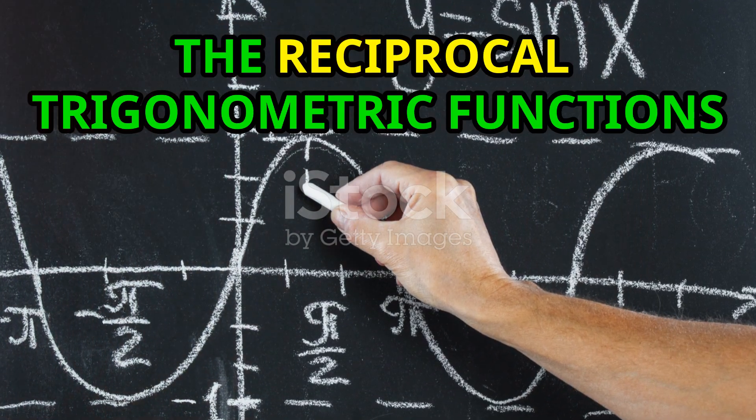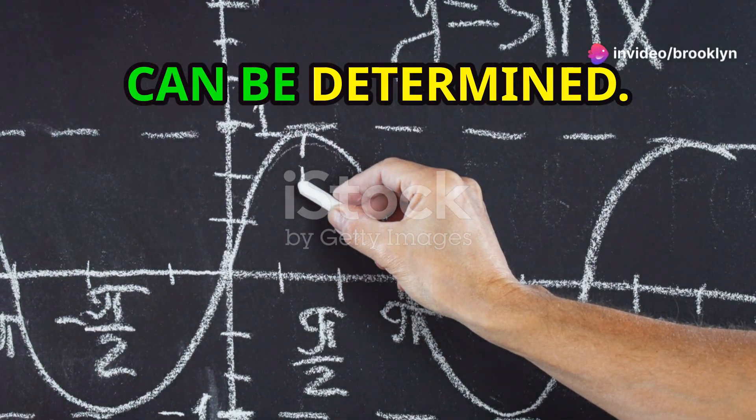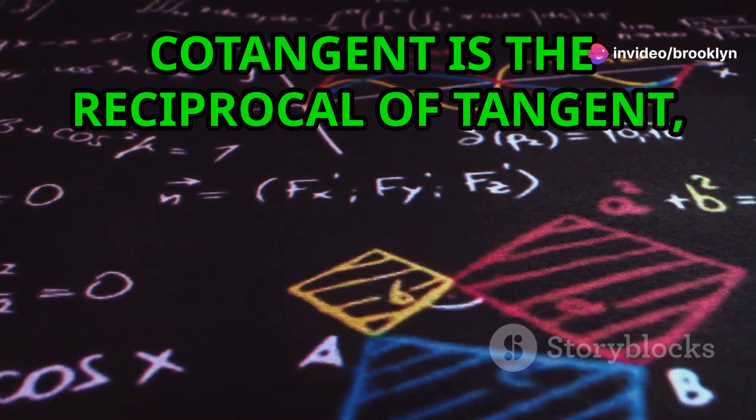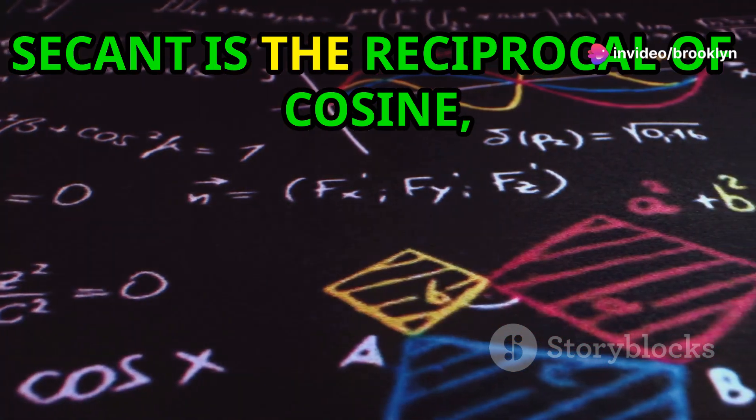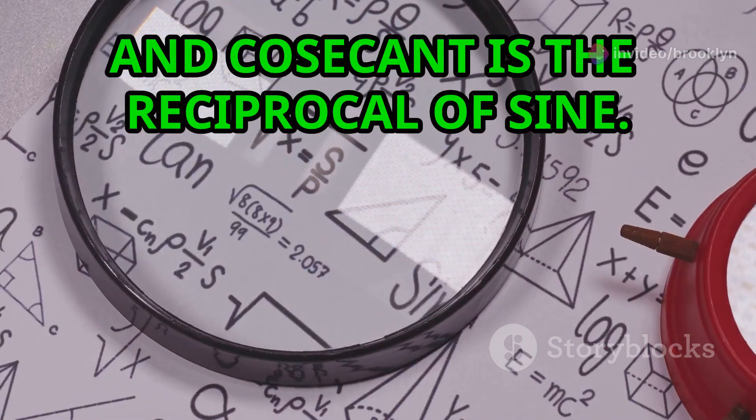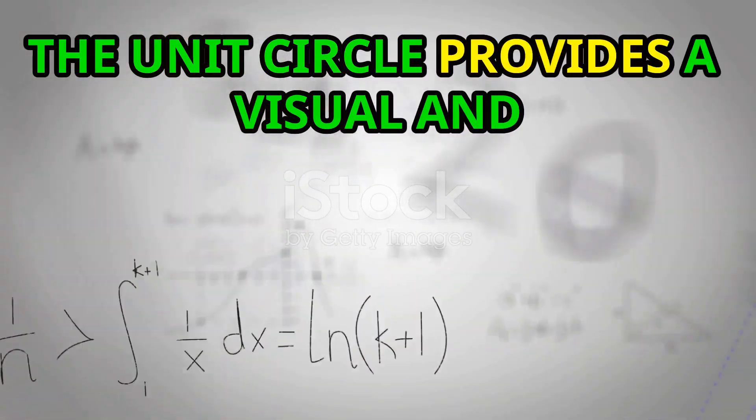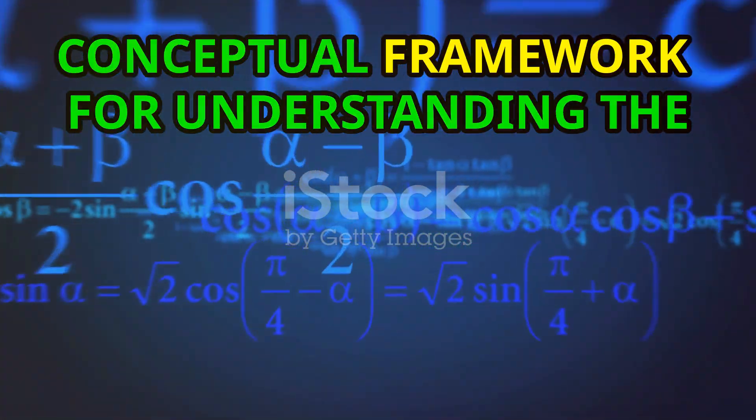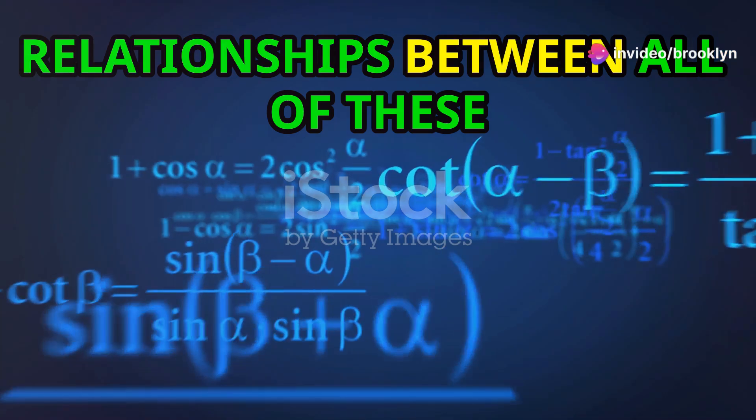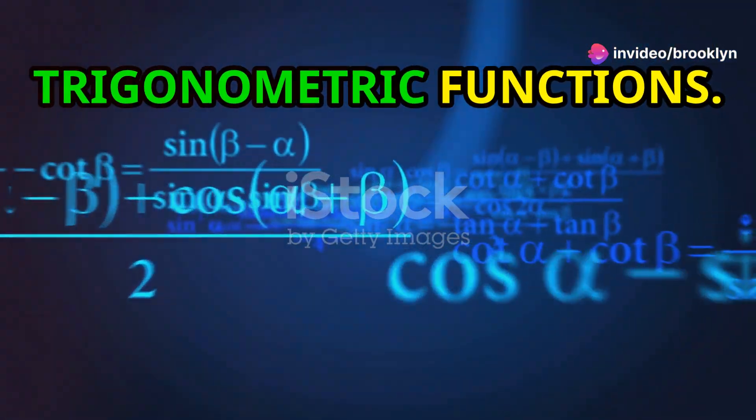Similarly, the reciprocal trigonometric functions can be determined. Cotangent is the reciprocal of tangent, secant is the reciprocal of cosine, and cosecant is the reciprocal of sine. The unit circle provides a visual and conceptual framework for understanding the relationships between all of these trigonometric functions.